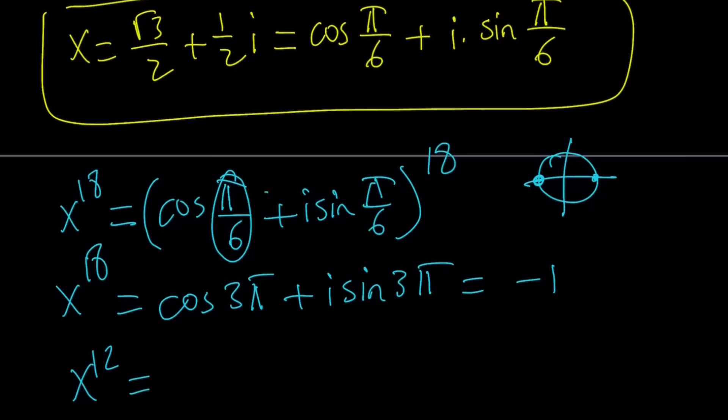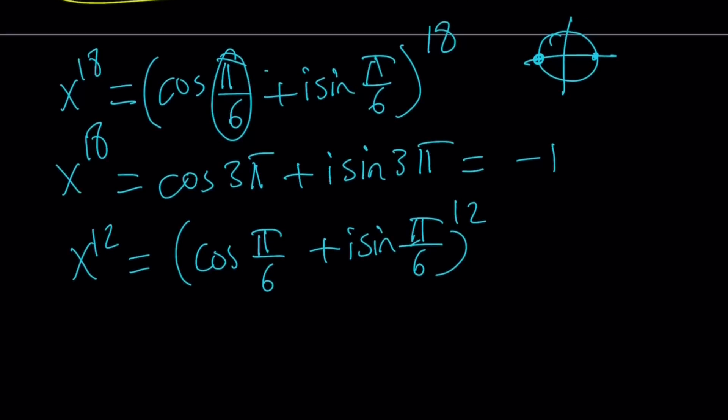How about 12th power? You're just going to multiply by 12, that should be easy too, and if you do, you're going to get x to the power 12 equals cosine of 2 pi plus i sine 2 pi, because pi over 6 times 12 is equal to 2 pi. Cosine of 2 pi is the same as cosine of 0, which is equal to positive 1, and sine of 2 pi is 0, just like sine of 3 pi.